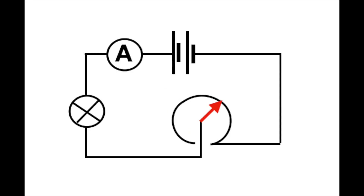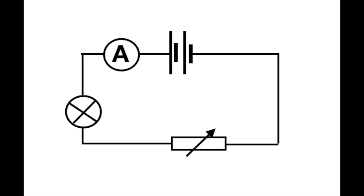circuit, the sliding contact moves around the wax and graphite shape, changing the amount that is in the circuit and therefore changing the resistance. As a consequence, the current can be turned up and down, and as we saw before, that image is represented by a box with an arrow through it — the variable resistance symbol.